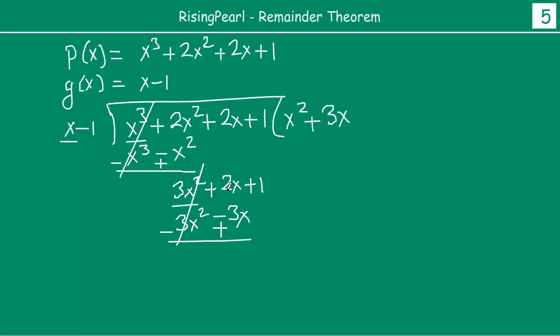2x plus 3x gives you 5x plus 1. When you multiply 5 to both the terms, you get 5x minus 5. So this basically cancels out and 1 plus 5 is 6.